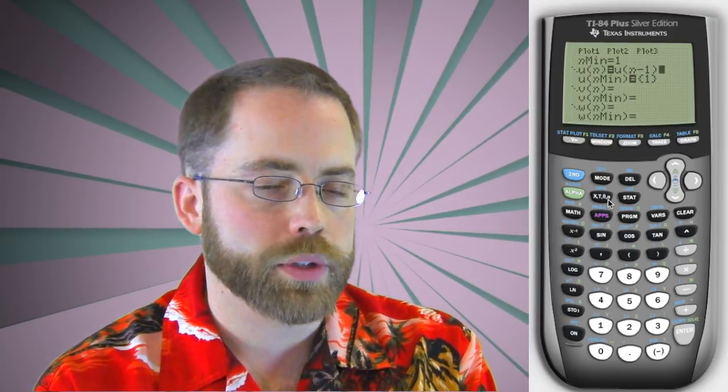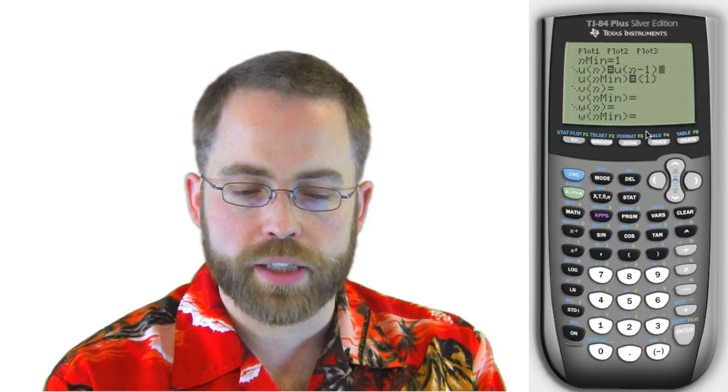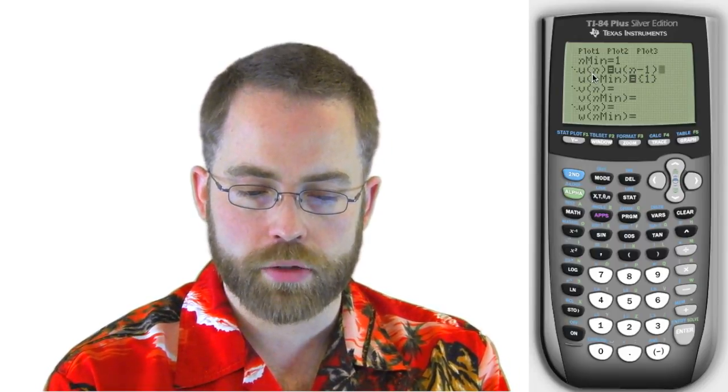So if I want to find the nth term in sequence u, I'm going to say that it is equal to u of n minus 1. I'm making a recursive formula. See how I did that? u, the little lowercase u, is second 7, parentheses, and now my xt theta n button, I'm using it as an n button now in sequence mode, and what I have right here, is saying any given term is equal to the term before it. See how that translates into English? u sub n is equal to u sub n minus 1. So if I'm in place number 100, it's equal to place number 99. If I'm in place number 99, it's equal to place number 98.